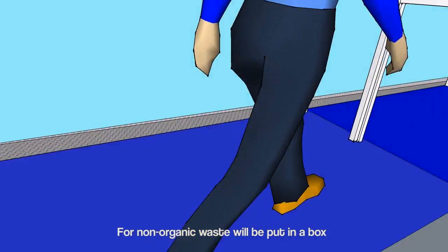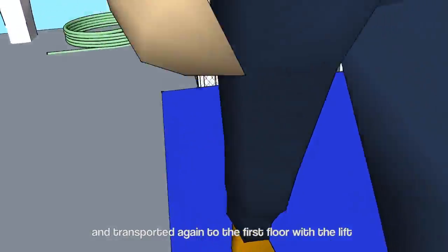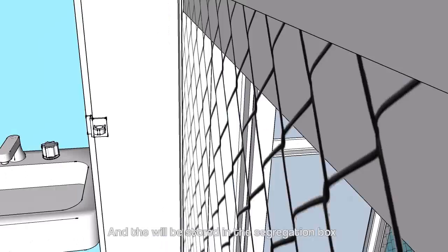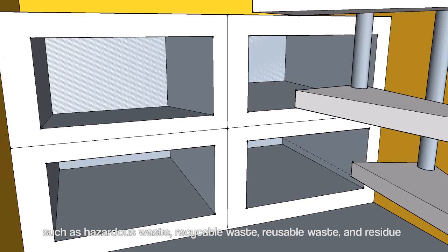Non-organic waste will be put in a box and transported again to the first floor with a lift. Then it will be stored in the segregation box. There are four types of waste that will be segregated: hazardous waste, recyclable waste, reusable waste, and residue.